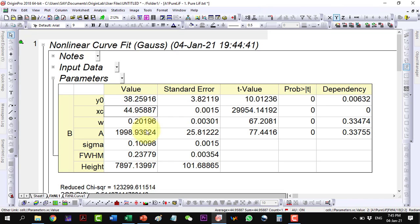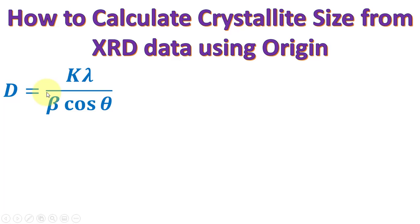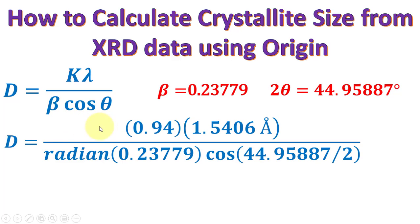Let's go to our calculations. Here is our Scherrer equation. The value of beta is 0.23779 and the two theta value is this one. Let's put this in the equation.